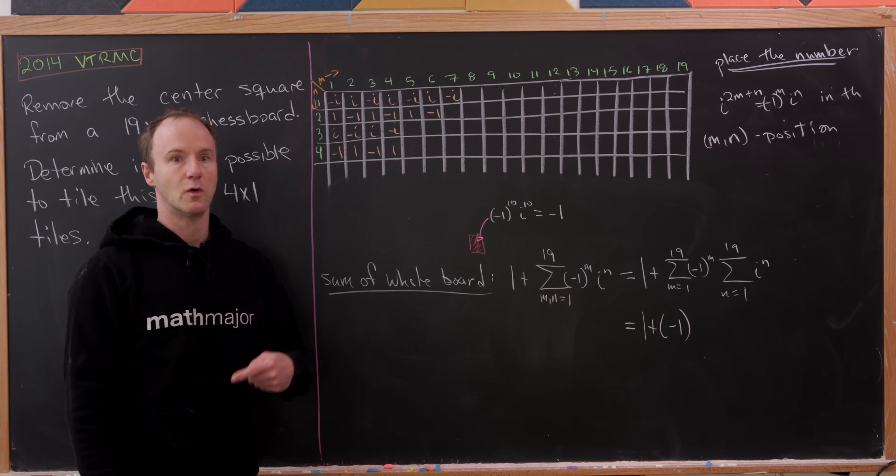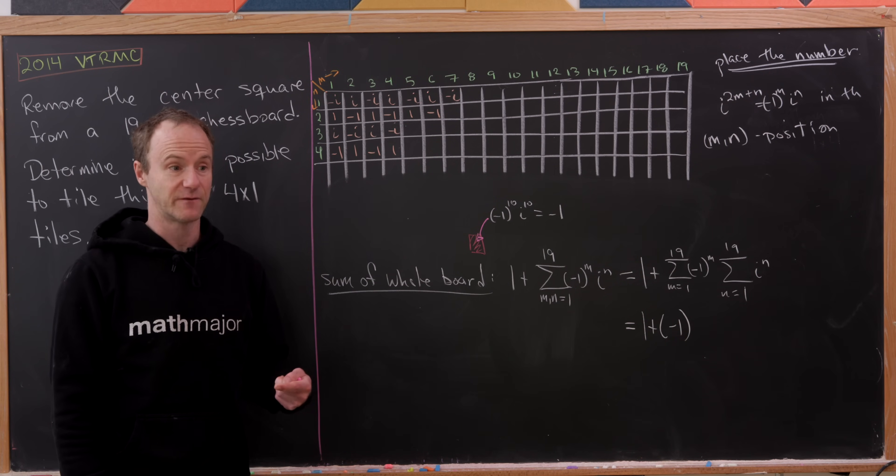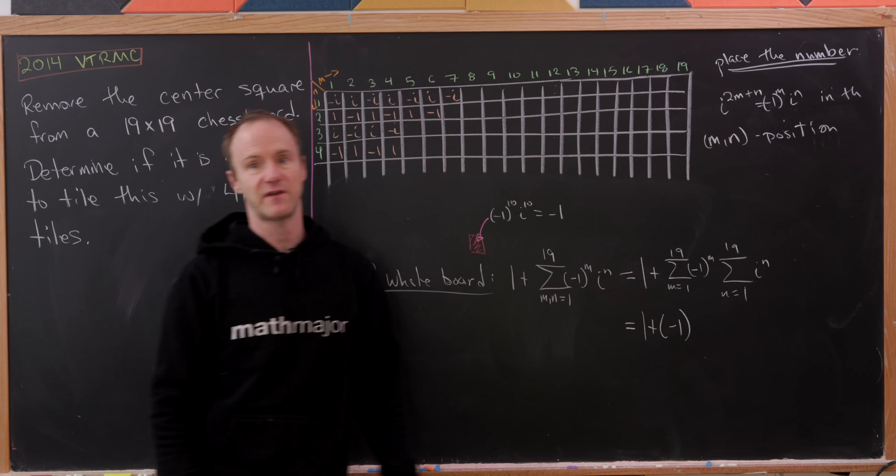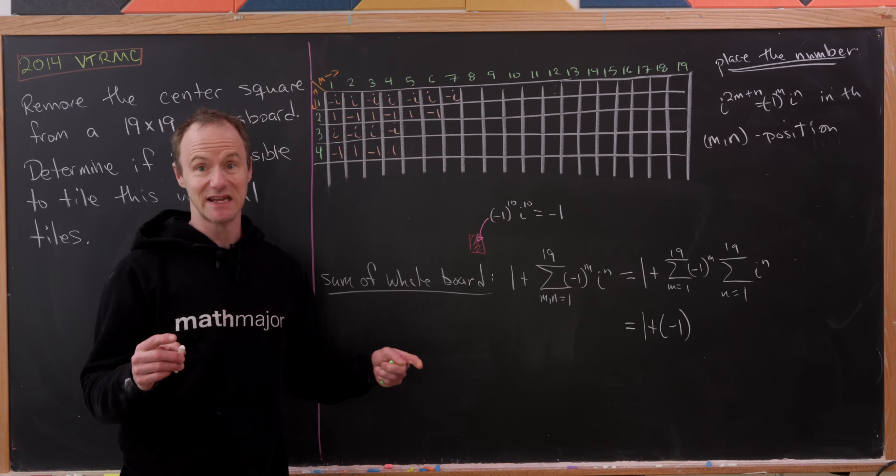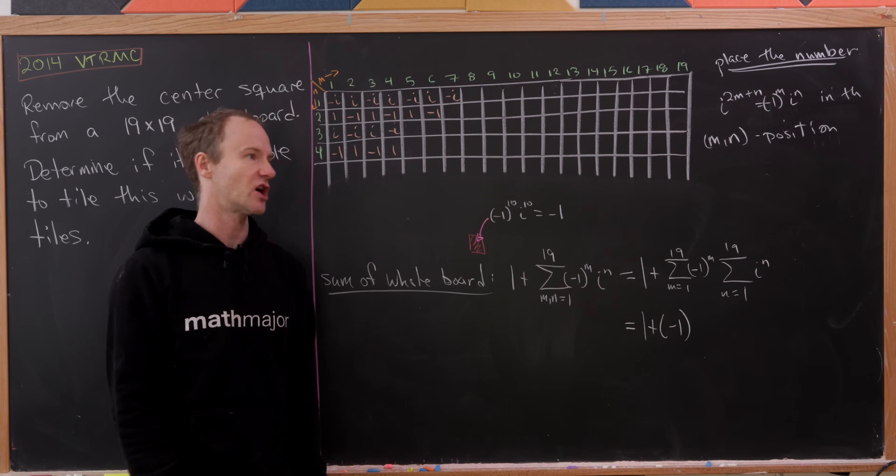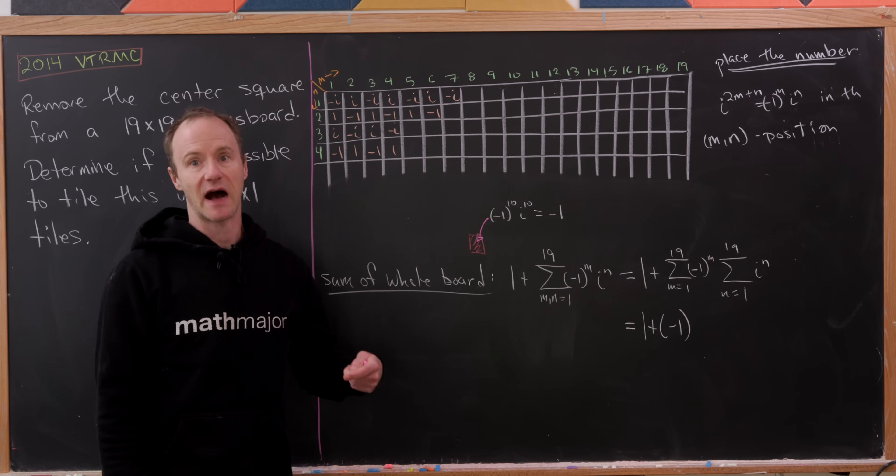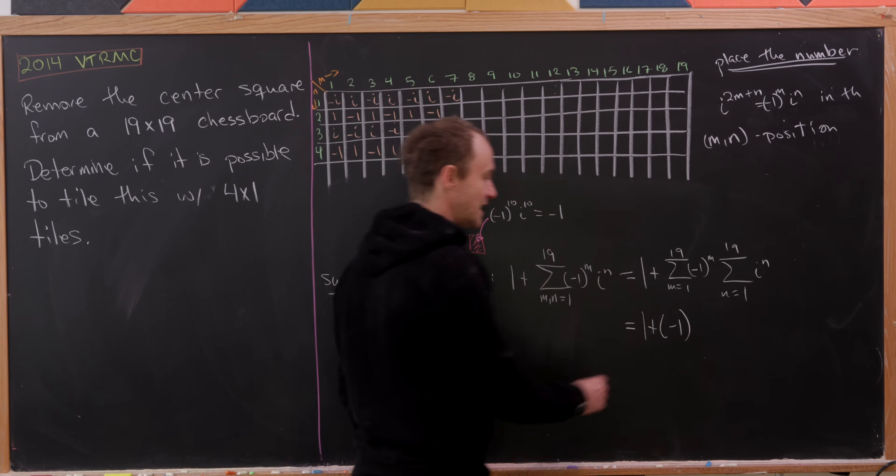Since i plus i squared plus i cubed plus i to the fourth equals 0, that means that these will simplify or cancel out to 0 in chunks of 4. So that means the sum up to 16 will be equal to 0 if you just chunk it into pieces. That means in the end we're going to be left with the i to the 17, which turns out to be i,